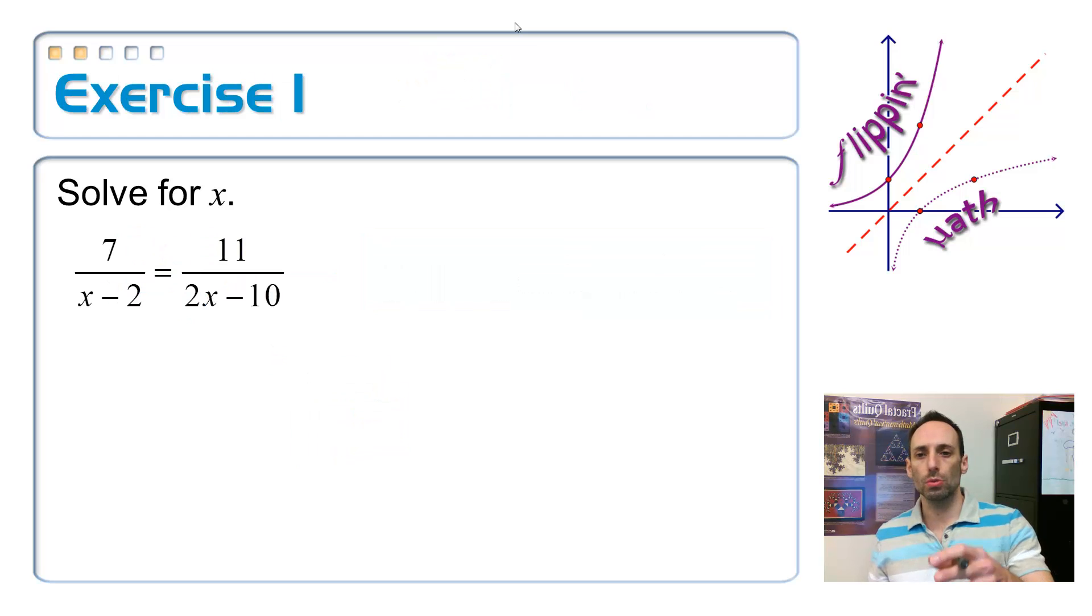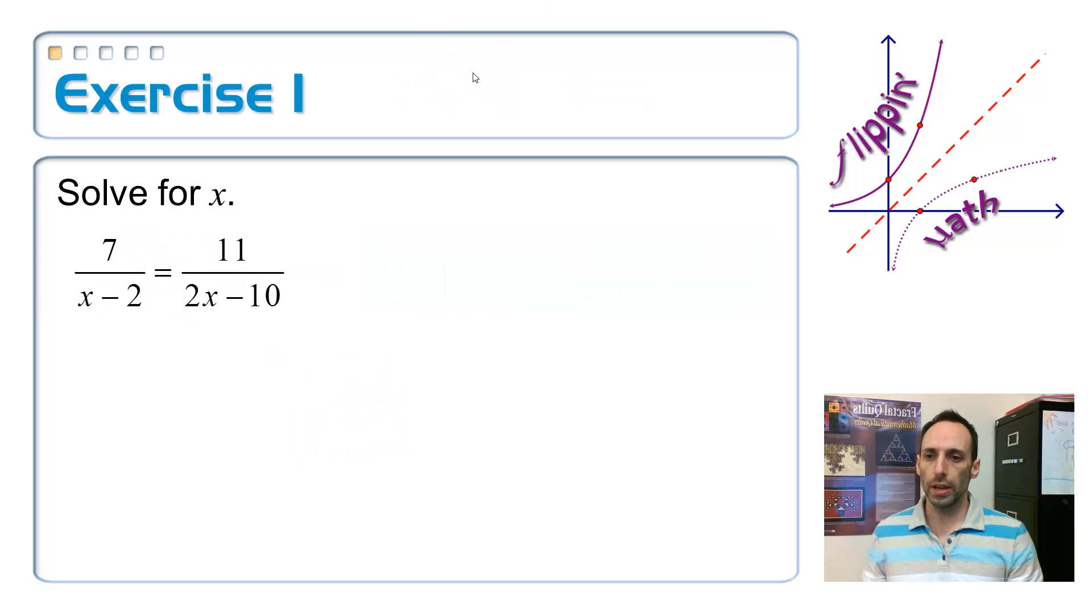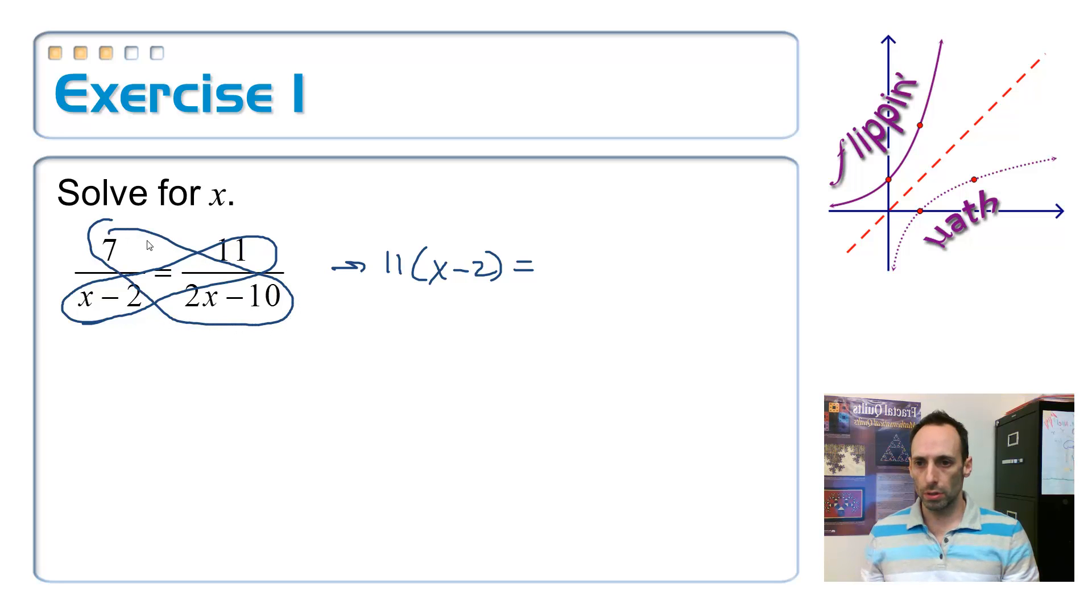So let's follow this up with an actual rational equation. I've got two rational expressions that are equal to each other. It looks like a proportion, so I'm going to solve it by cross multiplying. So let's just cross multiply this. Here's one cross product, that is 11 times x minus 2 is equal to, and then here's the other cross product, 7 times 2x minus 10. And I put the parentheses there on purpose.